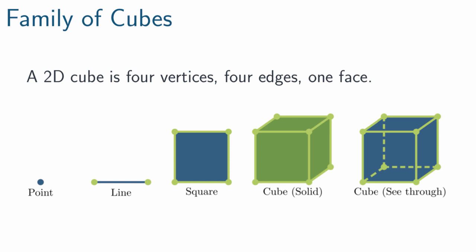A 2D cube is the center shape, it's a square, and it has 4 vertices, 4 edges, and 1 face.